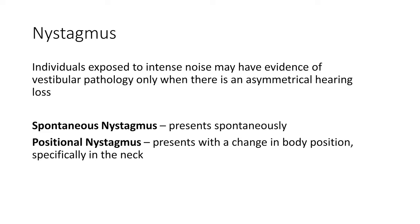Nystagmus is the involuntary movement of the eyes — a mixture of slow and fast movements that can occur normally when tracking a visual pattern. Abnormal nystagmus may be accompanied by vertigo, a sensation of spinning that can lead to dizziness and nausea. Individuals exposed to intense noise may show vestibular pathology only when there is asymmetrical hearing loss, meaning one ear is more affected than another. This leads to bilateral asymmetries in vestibular signals, making it harder for the brain to interpret head orientation and causing nausea. Positional nystagmus — which presents with a change in body or neck position — can be a good indicator that hearing loss has resulted in changes to vestibular signals.